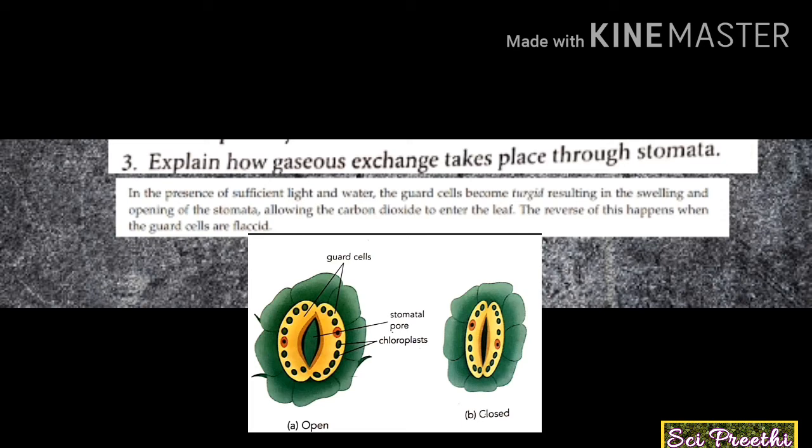Third question: explain how gas exchange takes place through stomata. In the presence of sufficient light and water, the guard cells become turgid, resulting in the swelling and opening of the stomata, allowing carbon dioxide to enter the leaf. Turgid means the state of being swollen due to high fluid content. The stoma closes when the guard cells become flaccid.